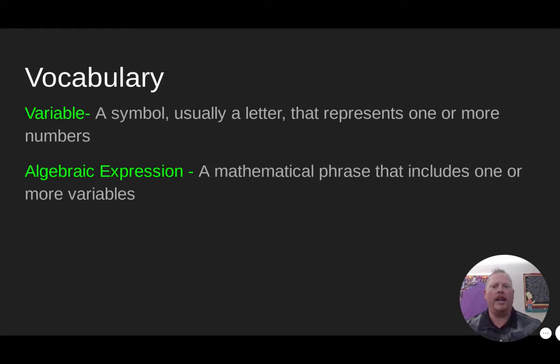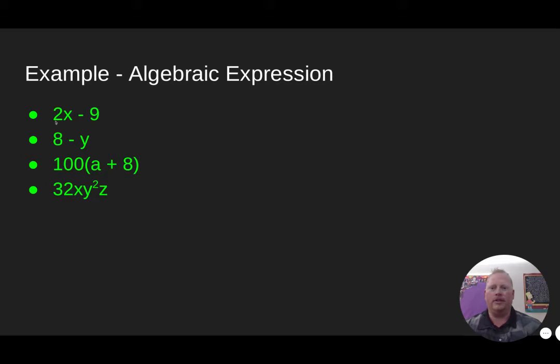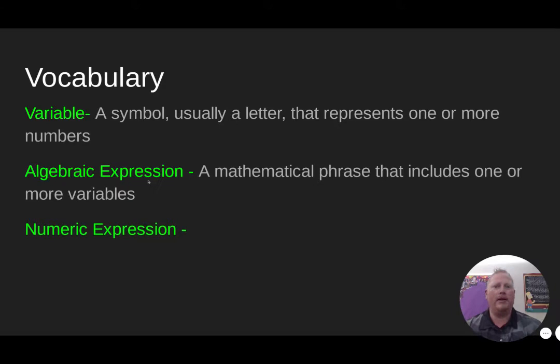An algebraic expression is a mathematical phrase that includes one or more variables. Here are some examples: 2x minus 9, 8 minus y, 100 times the quantity a plus 8, and 32xy²z. Notice all four of those expressions have a letter in them — that's what makes them algebraic expressions.